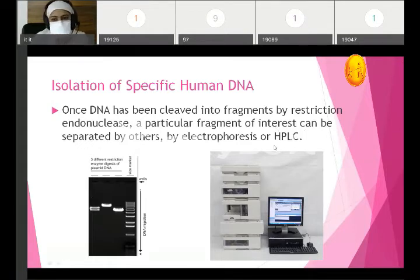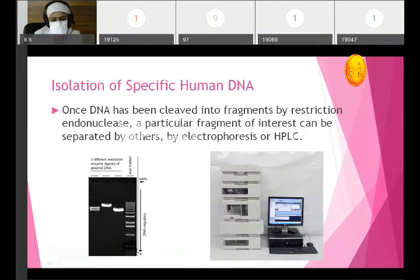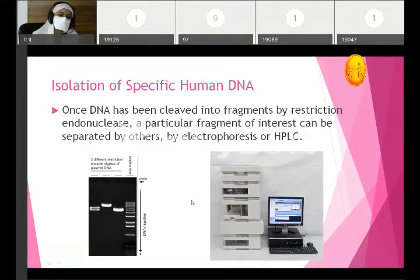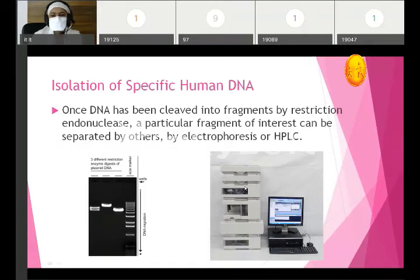In electrophoresis, we separate DNA fragments and compare them with a ladder — a marker by which we can identify which fragment we are supposed to isolate for recombination. The ladder allows comparison to identify the correct DNA fragment. This is one technique for separation; another technique is HPLC.